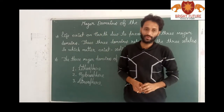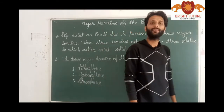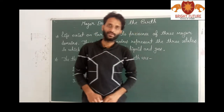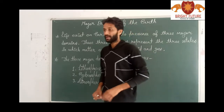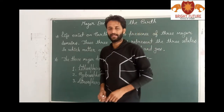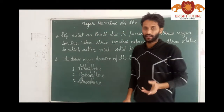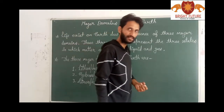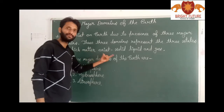You know very well that our earth is the only planet in the solar system known to have life. There are a total of eight planets in our solar system. The remaining seven planets which are closer to the sun are too hot, and those away from the sun are too cold to sustain life. That is why earth is the only planet in the solar system which has suitable conditions for living.